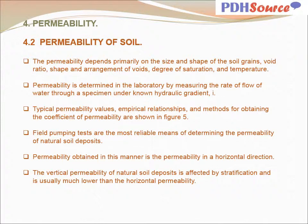Permeability depends primarily on the size and shape of the soil grains, void ratio, shape and arrangement of voids, degree of saturation, and temperature. Permeability is determined in the laboratory by measuring the rate of flow of water through a specimen under known hydraulic gradient I. Typical permeability values, empirical relationships, and methods for obtaining the coefficient of permeability are shown in Figure 5. Field pumping tests are the most reliable means of determining the permeability of natural soil deposits. Permeability obtained in this manner is in the horizontal direction; vertical permeability of natural soil deposits is affected by stratification and is usually much lower than horizontal permeability.